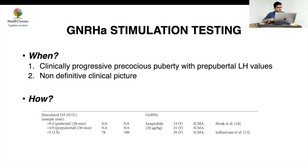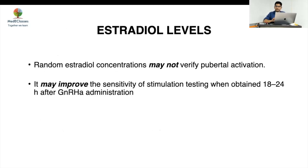If you use a cutoff of three, sensitivity would go up. Even if the stimulated level goes above two or three, it is still central — so a stimulated LH above one is not reassuring in that context. For distinguishing kallmann syndrome from CDGP, the cutoff is five again; in kallmann it will be less than one, and similarly in peripheral precocious puberty it will be less than one. If it is three or four on stimulation, it is still central — this data can be confusing.